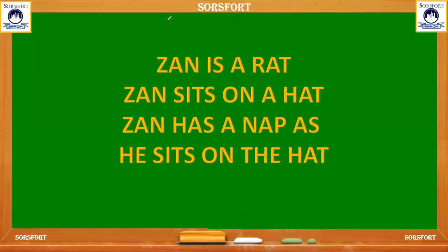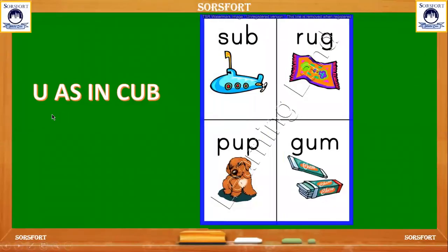Next letter we can see: U. U as in cup. Where is U in the cup? It is in between C and P. Here you can see C, U, P — cup. S, U, B — sub. R, U, G — rug. P, U, B — pub.